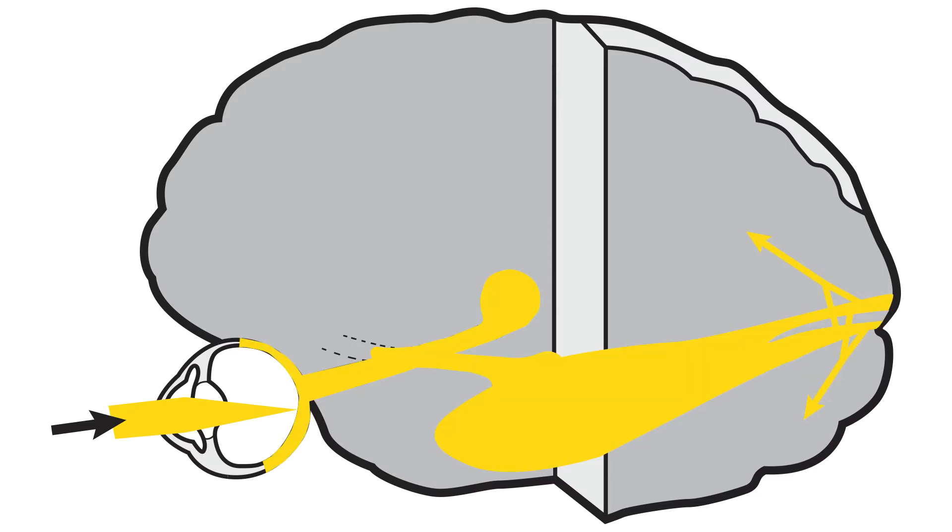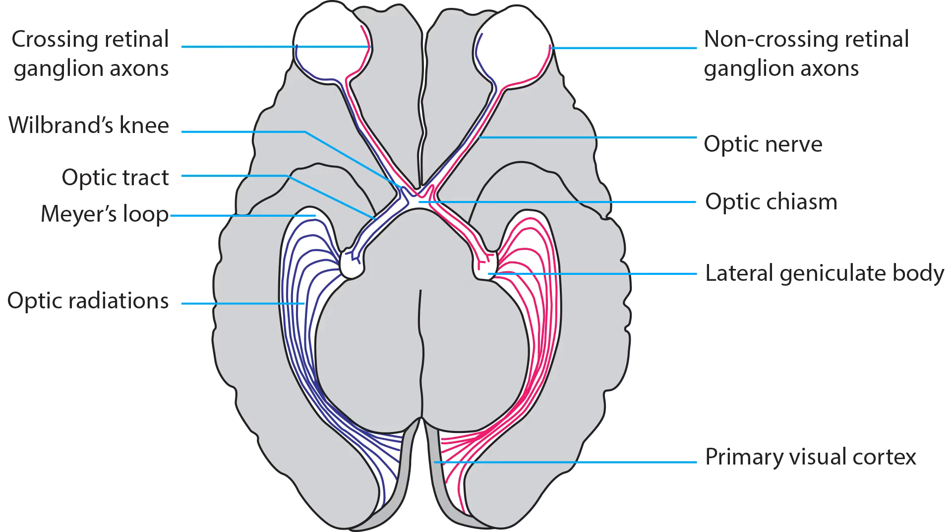The retinocortical segment converts light into a neural signal that goes from the retina to the primary visual cortex. This video reviews the pre-chiasmal portion of the retinocortical pathway which carries the signal from the retina to the optic chiasm.